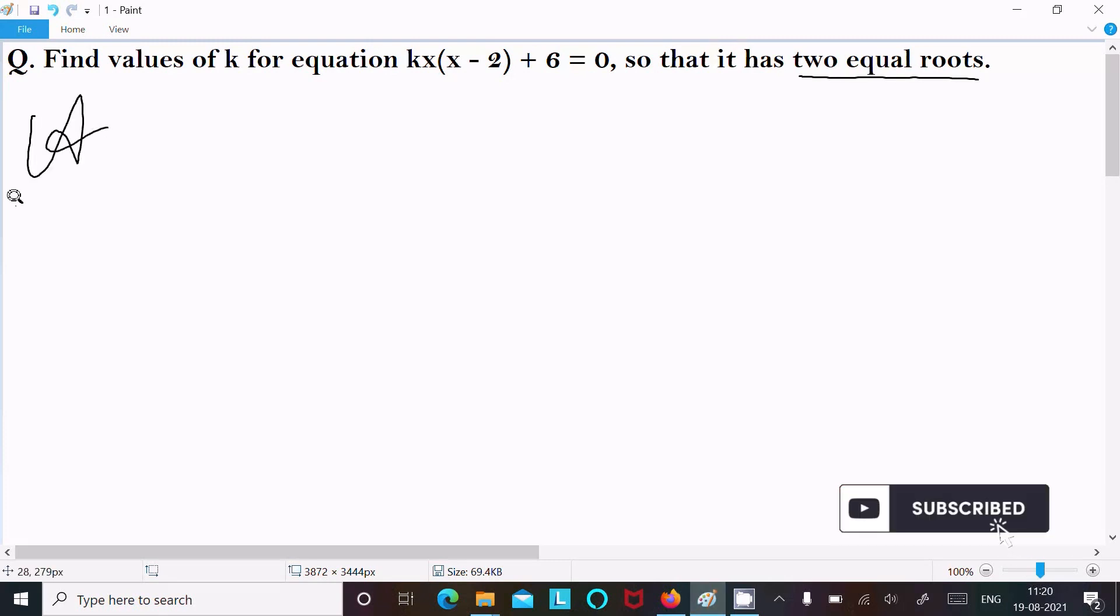First, let's write the given equation: kx(x - 2) + 6 = 0. Multiplying this out, we get kx² - 2kx + 6 = 0.